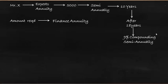So how much should he invest now so that after 18 years, continuously for 10 years, he will get 5000 semi-annually? For this, we should calculate the present value of annuity of that 5000, compounded semi-annually for a period of 10 years. The formula is: PVA equals annuity multiplied by the present value interest factor of annuity, which is a function of interest rate and number of periods.